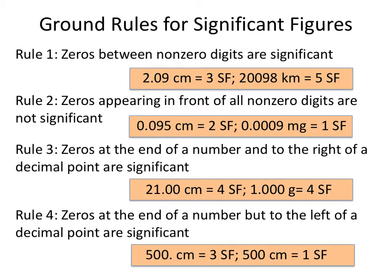The first thing we need to do is establish the ground rules for significant figures. Significant figures are digits that are significant, and we've already used measurement and established what digits are significant when we get measurements from specific pieces of equipment. We have to write them down correctly, or else whoever's reading our notebook or looking at our data after the fact may be confused about the precision of the instrument we used.